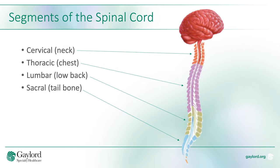The very top of your spinal cord in your neck is referred to as your cervical spine, and your cervical spine is connected to the arms — both sensation and movement. The middle back area of your spine is called your thoracic spine, and the nerves there innervate your chest and belly area as well as your back.